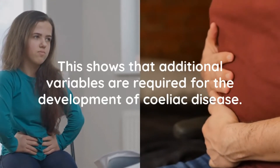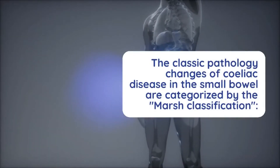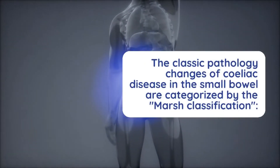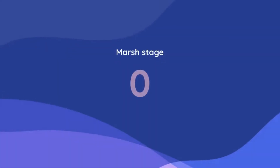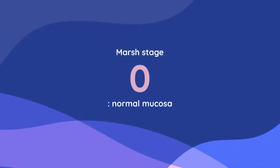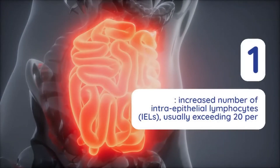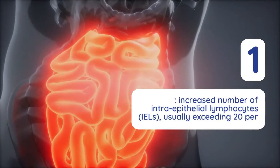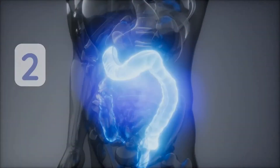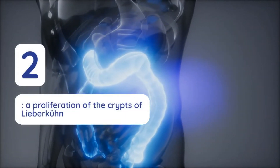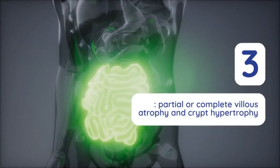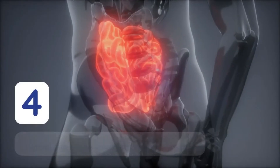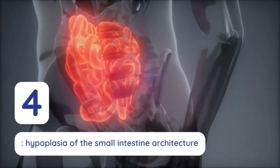The classic pathological changes of celiac disease in the small bowel are categorized by the MARSH classification. MARSH stage 0 means a normal mucosa. In MARSH stage 1, there is an increased number of intraepithelial lymphocytes, usually exceeding 20 per 100 enterocytes. In MARSH stage 2, a proliferation of the crypts of Lieberkühn. In MARSH stage 3, partial or complete villus atrophy and crypt hypertrophy is seen. And in MARSH stage 4, there is hypoplasia of the small intestine architecture.